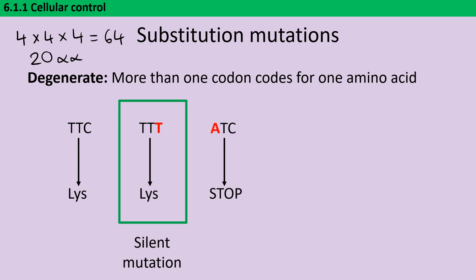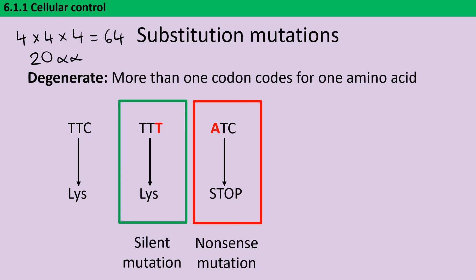Our second option is a substitution that produces a stop codon. This is what we call a nonsense mutation — the protein is going to be artificially truncated, shorter than it was supposed to be. This is usually deleterious, unless it's at the very end of the protein and that particular end is not particularly necessary for its function. Usually a nonsense mutation is going to be negative for the organism.